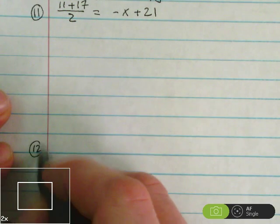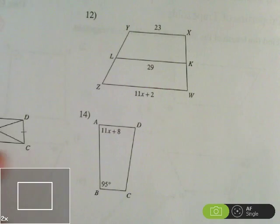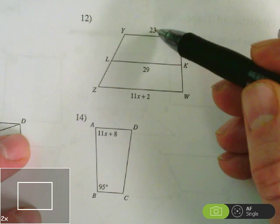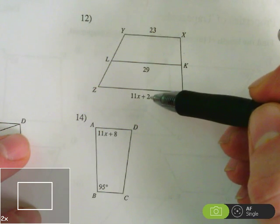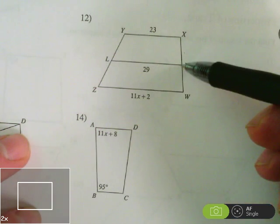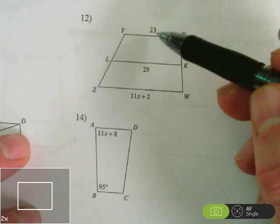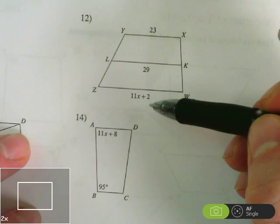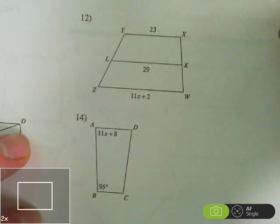Let's go ahead and write that out. We have 11 plus 17 over 2 equals negative x plus 21. Now we'll go down a little bit. Number 12. We're just setting up the equations here. Here we've got 23 and 11x plus 2 are the bases and the median is 29. So we'd have to average together 23 and 11x plus 2.